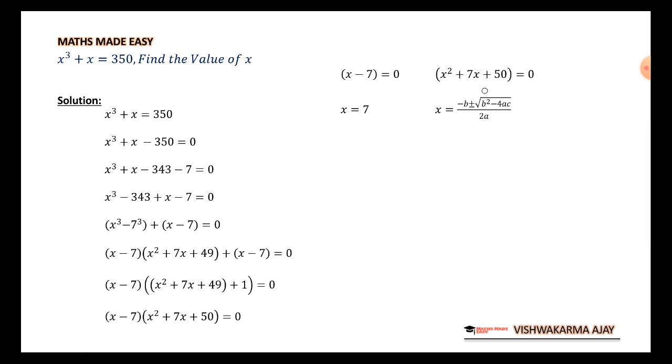Now, for this expression, we need the value of a, b and c. Let's find it. As you can see here, the coefficient of x square is 1. So, the value of a is 1. Coefficient of x is 7. So, the value of b is equal to 7. And the constant term is 50. So, the value of c is 50.